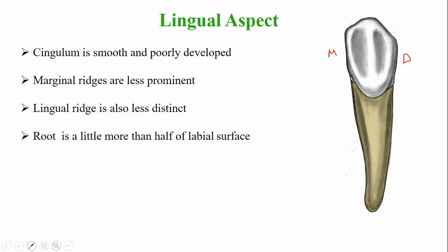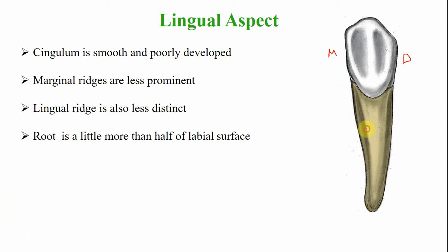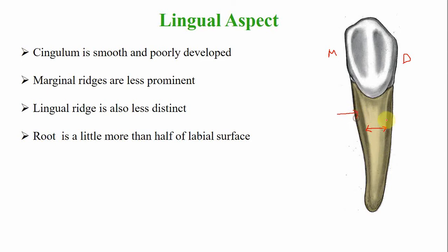From the lingual aspect, the root surface is slightly more than half the labial surface, with a taper on the lingual side. The lingual root surface is less developed and narrower mesiodistally compared to the labial surface, which is why parts of the mesial and distal root surfaces are visible from the lingual aspect.